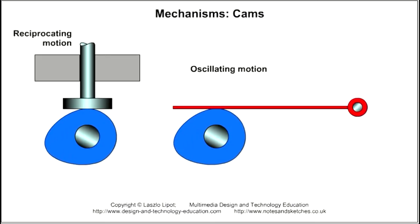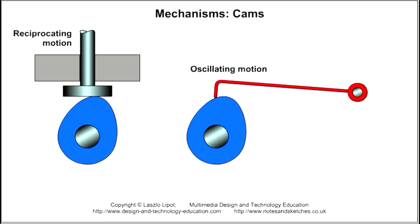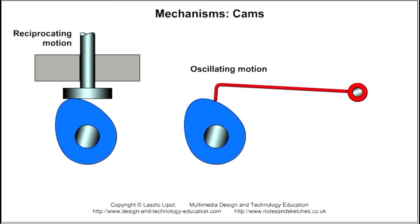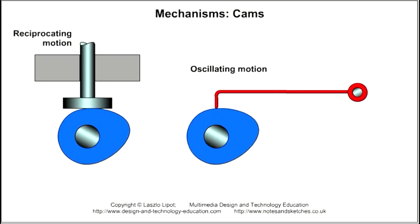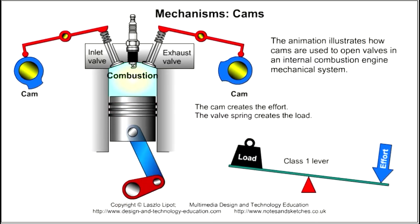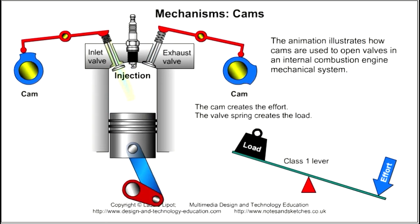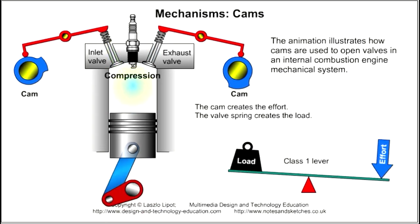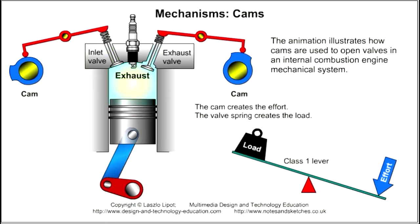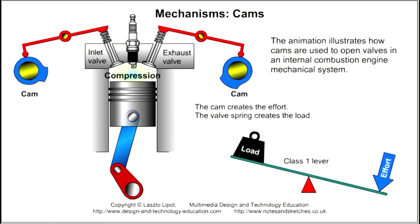An oscillating motion is created in the cam follower when the cam follower is a lever and its fulcrum is not in line with the cam axis. In the animation of the internal combustion engine, the cam followers are pivoted in the middle with the effort force on one end of the lever and the load on the other end, so the levers are class 1 levers.